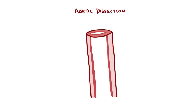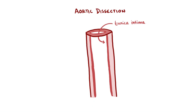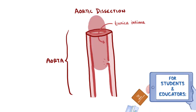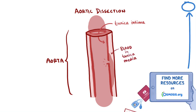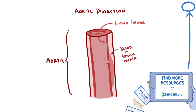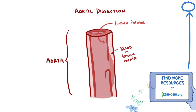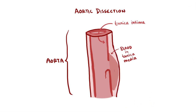An aortic dissection is where part of the tunica intima, which is the endothelial or innermost layer of the blood vessel of the aorta, is ripped off. A tear in the tunica intima of the aorta forms, and the high pressured blood flowing through the aorta begins to tunnel between the tunica intima and the tunica media, separating the two layers. As the high pressured blood continues to shear more and more of the tunica intima off the tunica media, blood starts to pool between the two layers, increasing the outside diameter of the blood vessel.